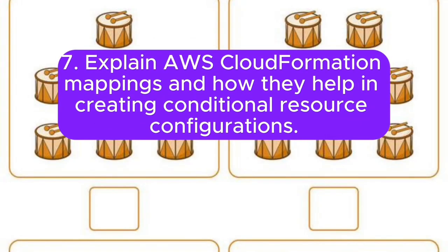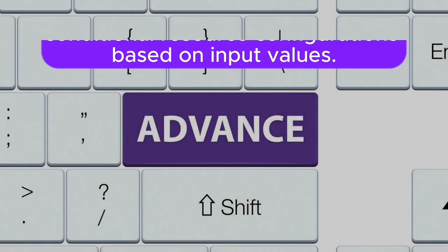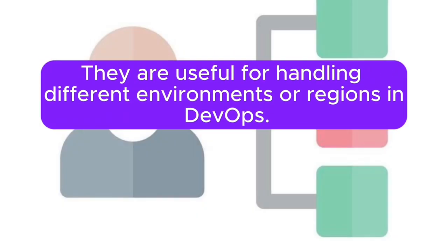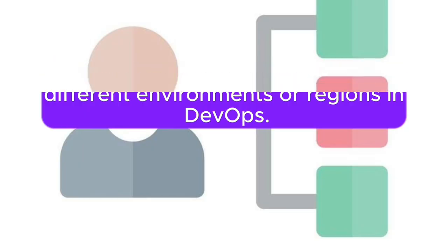Question 7: Explain AWS CloudFormation mappings, and how they help in creating conditional resource configurations. Answer: Mappings are key-value pairs that allow you to define conditional resource configurations based on input values. They are useful for handling different environments or regions in DevOps.